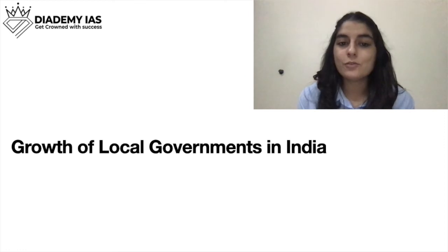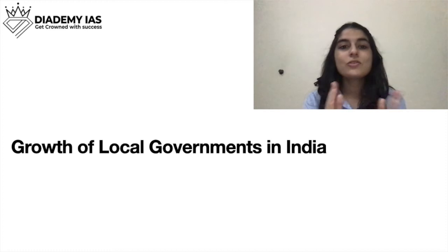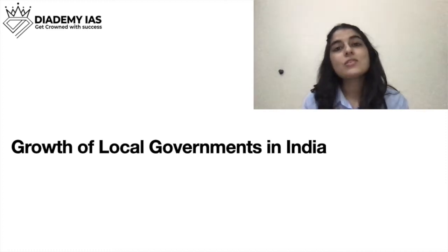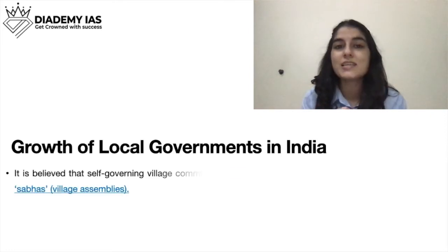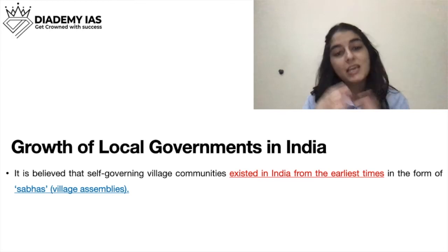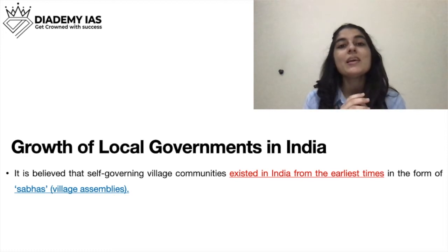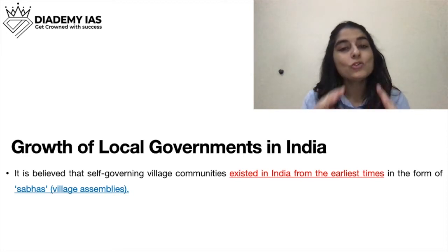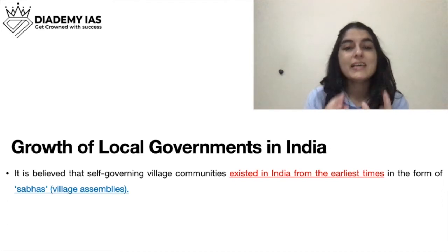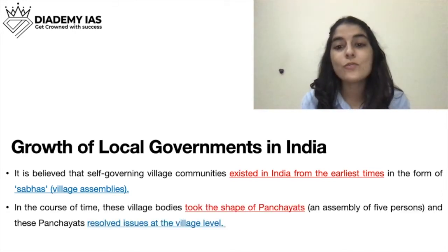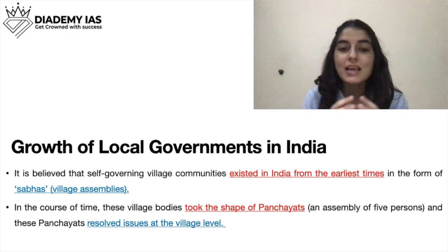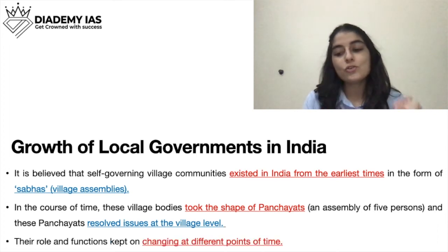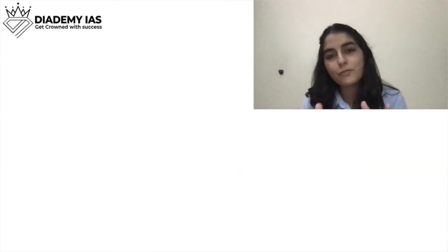Now let's look at the growth of local governments in India. When our constitution came, local governments were not mentioned in it — these things came through the 73rd and 74th amendments in 1992. But before that, in ancient India, village assemblies existed in the form of sabhas and samitis. These converted into panchayats over time. A panchayat means an assembly of five people. From time to time, panchayats existed with different names and different functions, and their role kept changing.